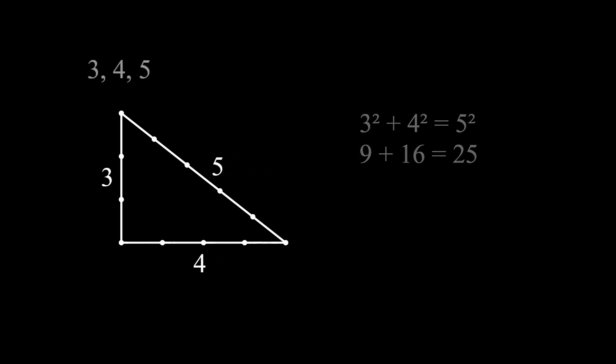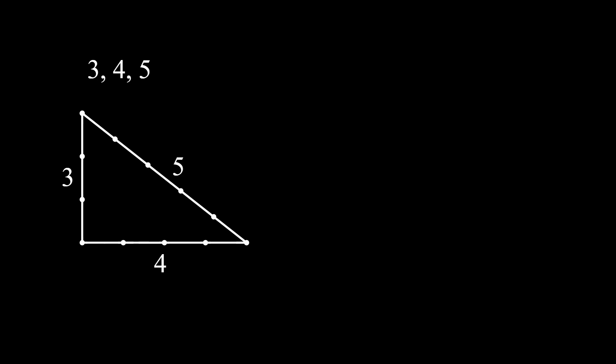Numbers like 3, 4, and 5 are called Pythagorean triples because they're sets of three integers that satisfy the Pythagorean Theorem. In some ways, it's amazing that Pythagorean triples exist at all, isn't it?